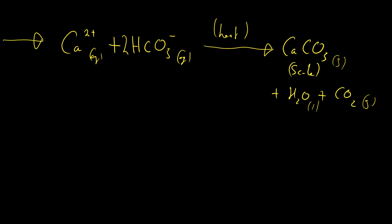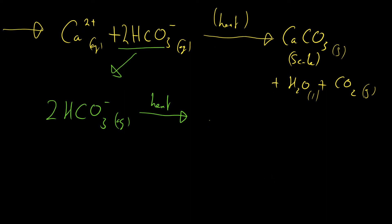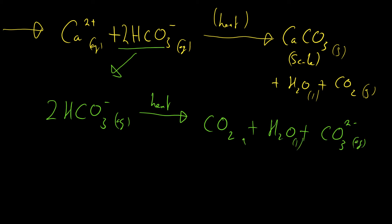But why does it actually happen? Our hydrogen carbonate ions, when we heat and boil, actually break down — they decompose into carbon dioxide (gas) plus water (liquid) plus carbonate ions, CO₃²⁻, which are in solution. This is the important part — this is the reason why heat allows us to get rid of the hardness in temporary hard water.